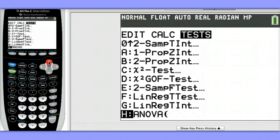I'm going to hit the up arrow to get there very quickly. Choose Option G, Linear Regression T-Interval.